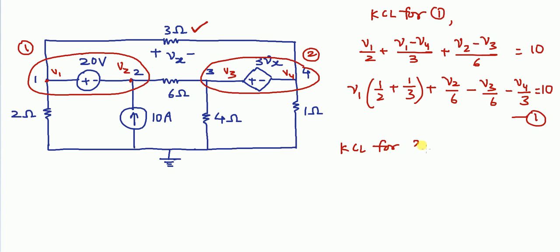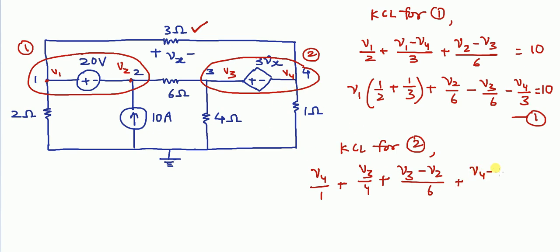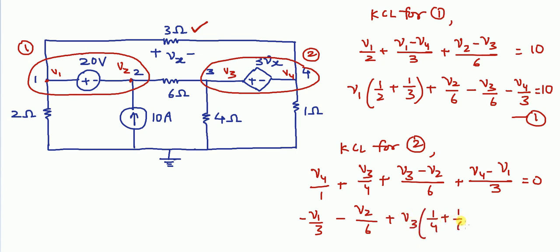KCL at super node 2: current leaving through the 1 ohm resistance is V4/1, through the 4 ohm resistance is V3/4, through the 6 ohm resistance is (V3 − V2)/6, and through the 3 ohm resistance is (V4 − V1)/3 = 0. This simplifies to: −V1/3 − V2/6 + V3·(1/4 + 1/6) + V4·(1 + 1/3) = 0. This is the second equation.